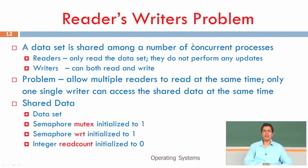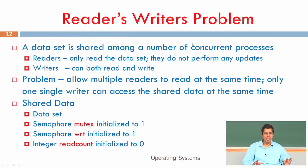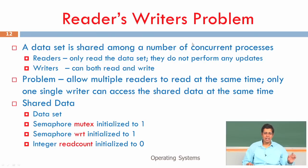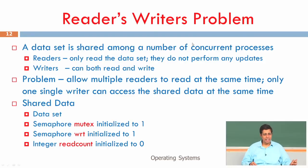Now we will explain synchronization through the readers-writers problem, which is very interesting. There is a shared data set; multiple readers can read from that data at the same point of time, but only one process can write at any time, and when somebody is writing, nobody can read. The three conditions are: multiple readers can read simultaneously; at most one writer can write; when a writer is writing, no reader can read.